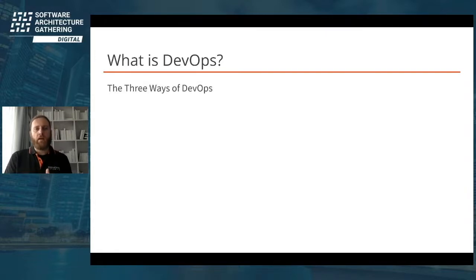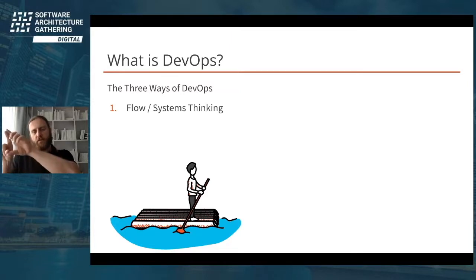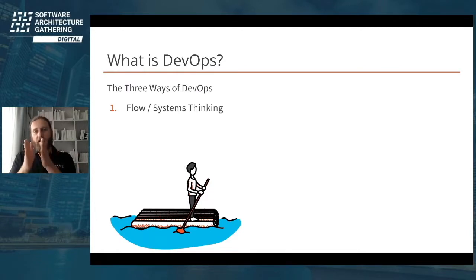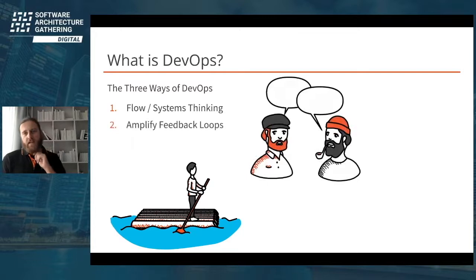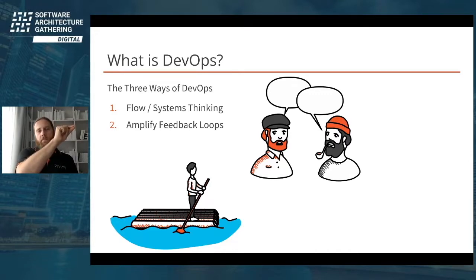The first way is flow and systems thinking — we are trying to optimize flow of work through our value creation chain, visualize it, and work with the whole system of value creation, not only with our tiny silo. The second way of DevOps is about feedback, called amplify feedback loops. That means we should install and amplify feedback loops wherever we can — the most obvious one is a feedback loop from right to left once we have improved flow left to right.